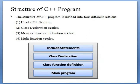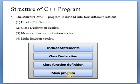Now we will start the structure of a C++ program. The structure of a C++ program is divided into four different sections: header file section, class declaration section, member function definition section, and main function section. Here is the diagram showing: include statement (header file), class declaration, class function definition (member function definition), and main program.